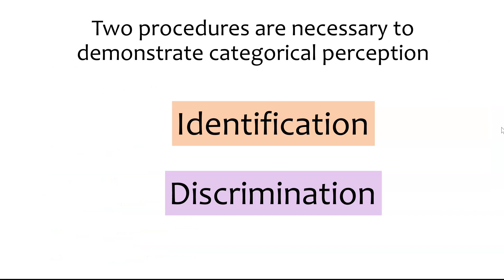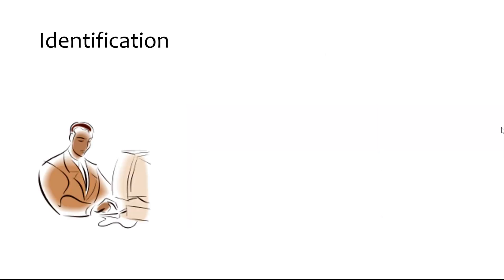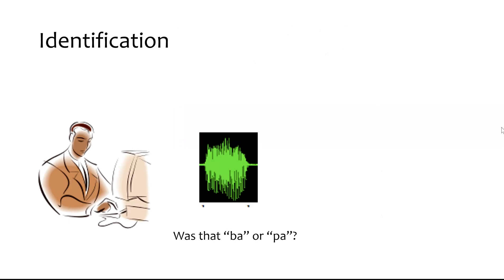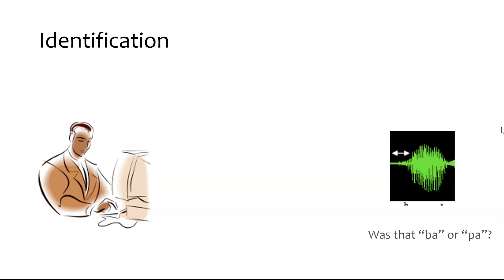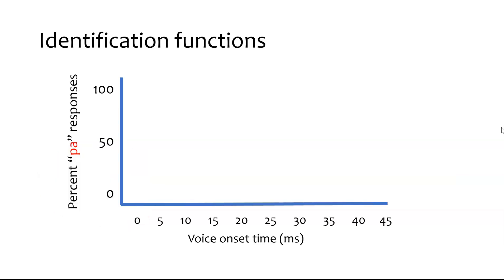To demonstrate that we're perceiving things categorically, we have to do two things: run an identification test and a discrimination test. In an identification test, you hear one sound and you're asked, was it this one or that one? In this case, was this a BA or was it a PA? Then you get another sound — is this one a BA, is this one a PA? Behind the scenes, what we're doing is continuously varying the sounds — for example, changing the voice onset time in five-millisecond increments.